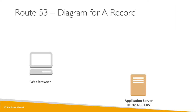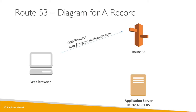So how does DNS work? Say a web browser wants to talk to an application server at IP 32.45.67.85. The first thing that happens is a DNS request is made to Route 53 — this happens behind the scenes, that's how the whole internet works. Our browser makes a DNS request for myapp.mydomain.com, and Route 53 replies with the matching record.